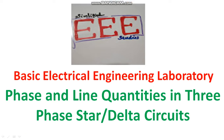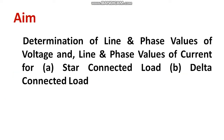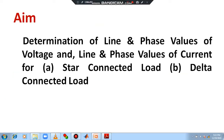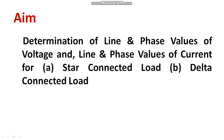Dear all, welcome to basic electrical engineering laboratory. In this experiment we will learn the phase and line quantities in three phase star and delta connected circuits. The ultimate goal of the experiment is to identify the relation between line quantities and phase quantities in star and delta connection respectively. You are going to learn how to perform the three phase connection, and you will be learning what is the difference between star and delta connection.